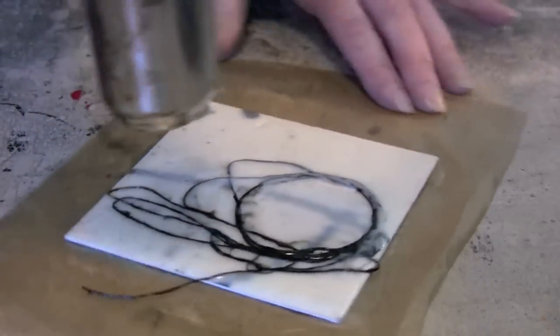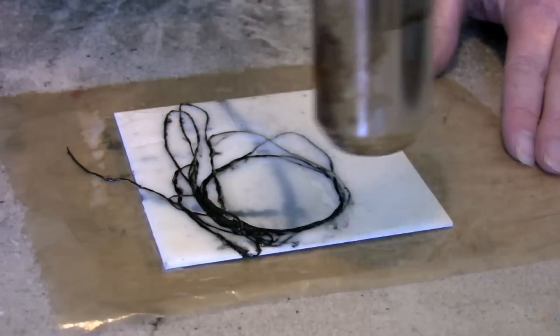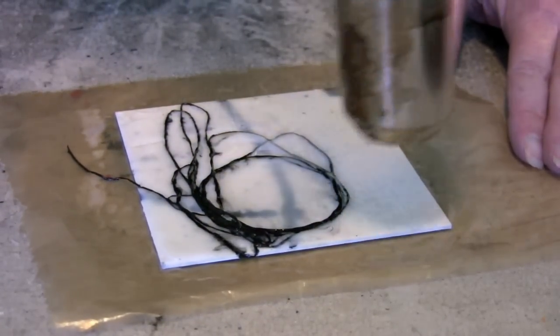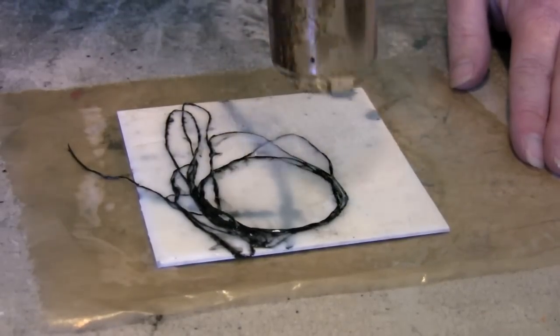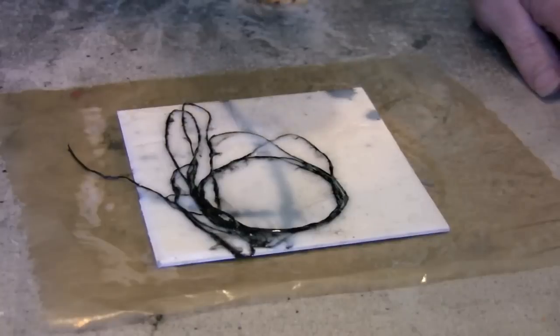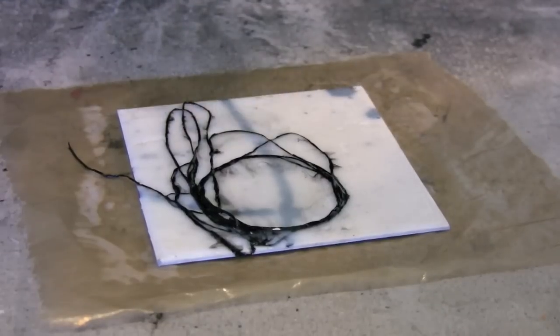You can see that as I'm taking the heat gun to it here, some of that black encaustic paint that I put on there is kind of leaching and swirling into the encaustic medium that I've painted on. So you get a little bit of gratuitous swirling and design pattern, which I quite like. I'll probably incorporate that into the final design.